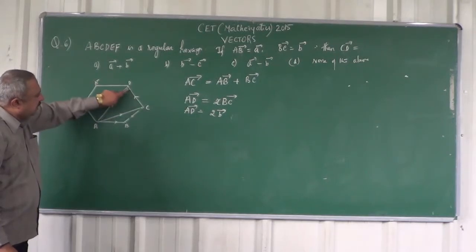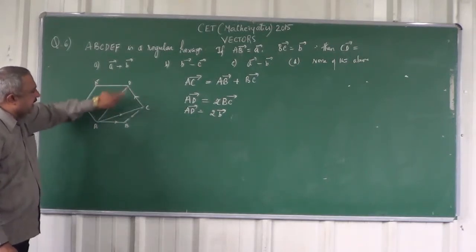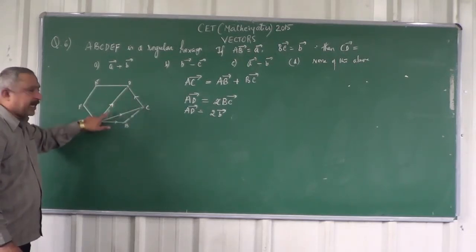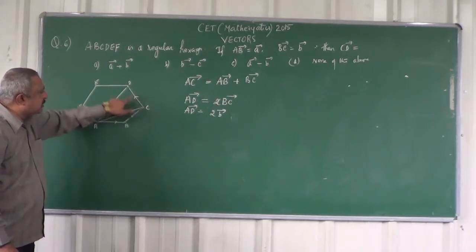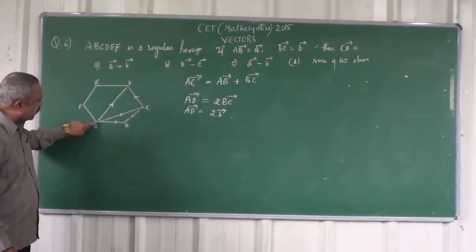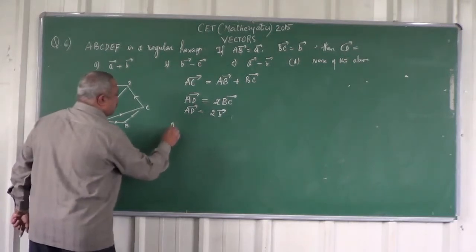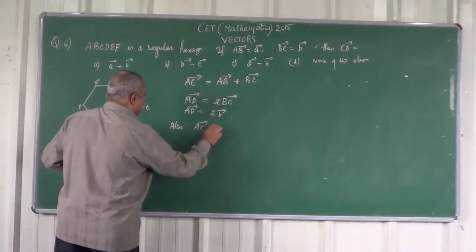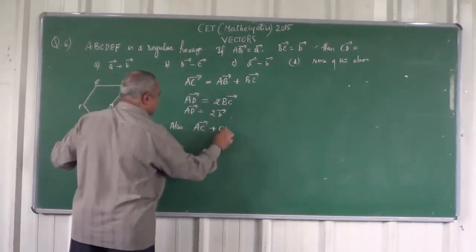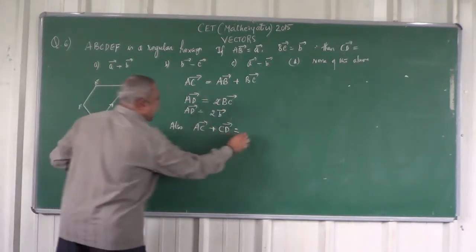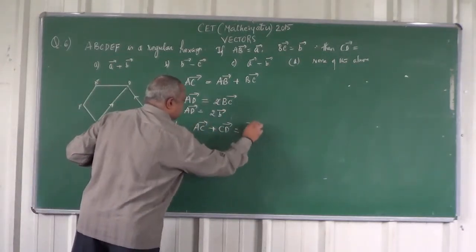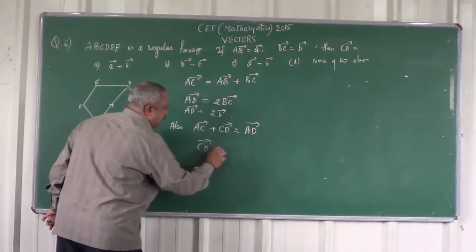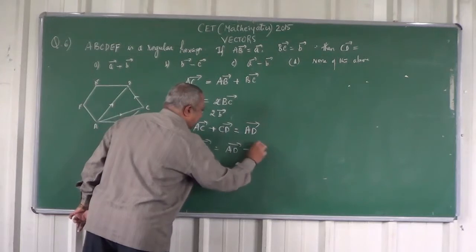Now I can also write vector CD using the triangle law of addition: vector AC plus vector CD equals vector AD. Therefore, vector CD equals vector AD minus vector AC.